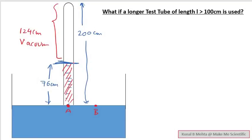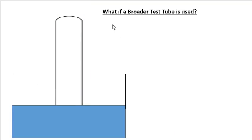We need not be confused that the length of the test tube is going to change our experiment. The pressure remains the same with external air pressure remaining the same, so only 76 centimeters of mercury column stays. Moving on — what if we take a broader test tube? Again, it is not going to affect our experiment because only 76 centimeters of the mercury column is going to balance the air pressure.